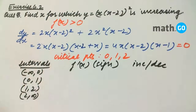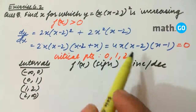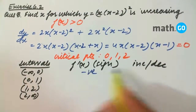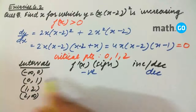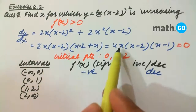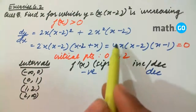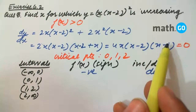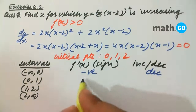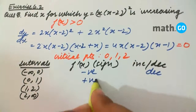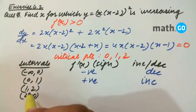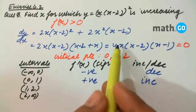For minus infinity to 0, consider x = -1: all factors are negative, so the overall value is negative — therefore decreasing. For 0 to 1, consider x = 1/2: 4 is positive, (1/2) is positive, (1/2 - 2) is negative, and (1/2 - 1) is negative, so overall the value is positive — therefore increasing.